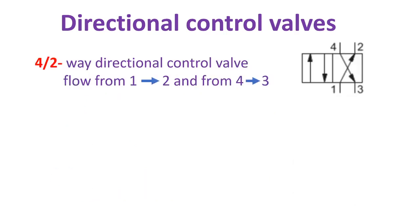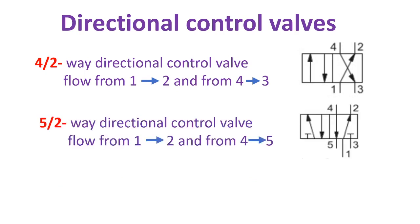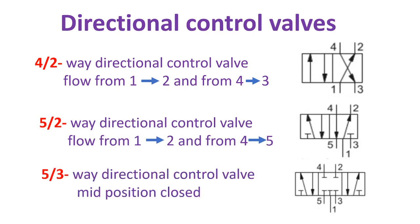The next one is a four two-way directional control valve, with flow from port one to two and from port four to three. The next one is a five two-way directional control valve, with flow from one to two and from four to five. Next, a five three-way directional control valve, main position closed.